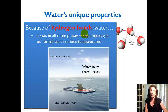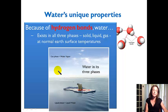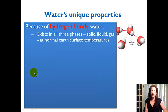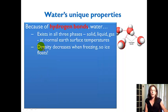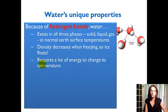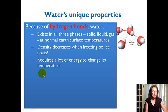Because hydrogen bonds are pretty strong, water exhibits some unique properties. One of those is that it exists in all three phases — solid ice, liquid water, and water vapor or the gaseous phase — all at normal Earth's surface temperatures, and that causes water to be very abundant at our Earth's surface. Also, ice floats, which is a very important characteristic of water, and that occurs because its density decreases when freezing. Another really interesting property is that it takes a lot of energy to change the temperature of water — that's what we call the specific heat, the amount of energy necessary to change the temperature of a substance one degree.